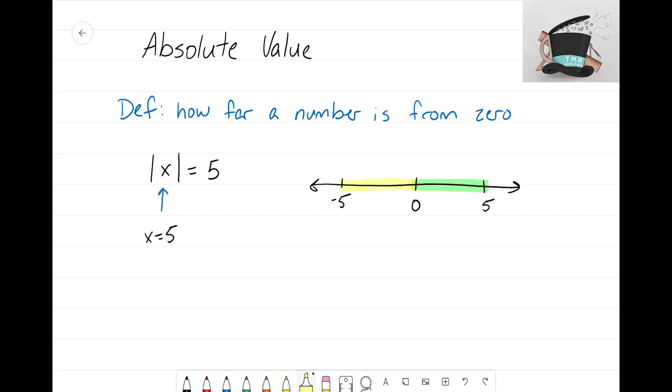That's why for a problem like this we would say that x equals positive 5 and negative 5. You can either write it as plus or minus 5, which is what I wrote here, or you could write x equals 5 and x equals negative 5.